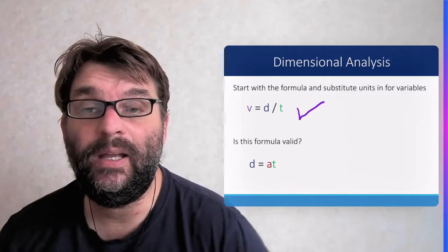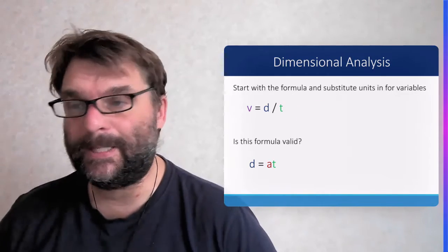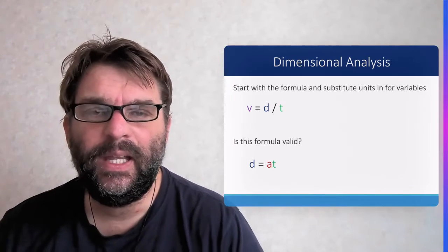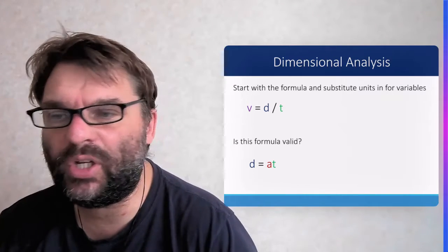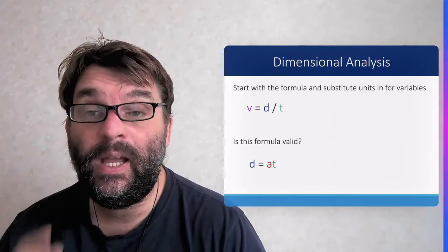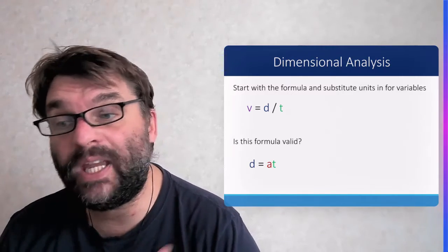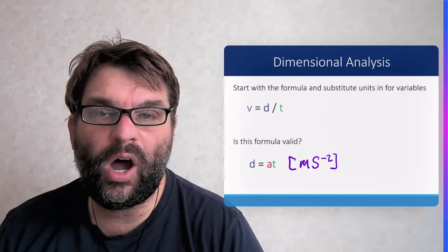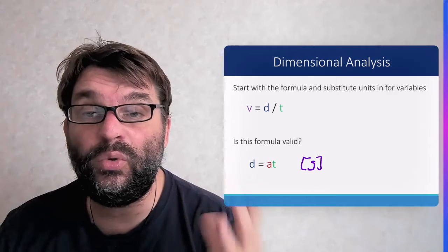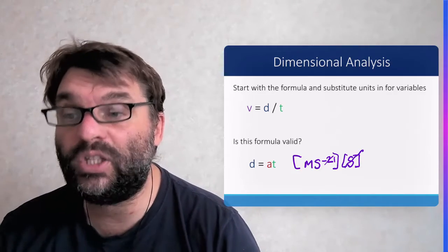But what about the second one? Is this formula valid: distance equals acceleration over time? Okay, so our units for acceleration are going to be meters per second per second. Our time is going to be given in seconds. So if you do that, you get meters per second per second times seconds, which equals meters per second. One of those seconds cancels out.